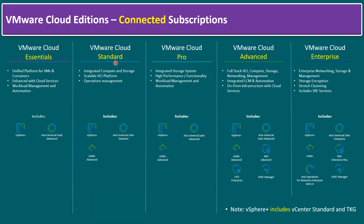VMware Cloud Standard comes with vSphere Plus and Aria Suite Standard, and also includes vSAN, providing integrated compute and storage — a feature not available in Essential. VMware Cloud Pro is similar to Standard but includes Aria Universal Suite Advanced instead of Aria Suite Standard.